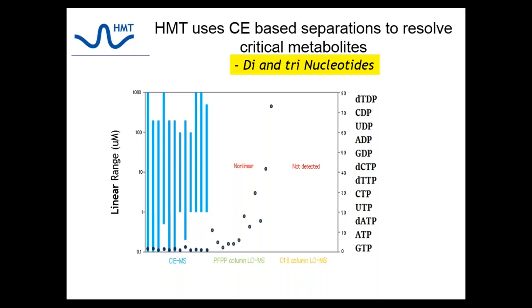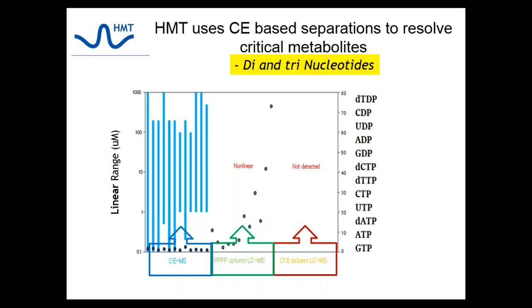In addition to having mass spectrometry resolution needed to track C-13 transfer and metabolic movement, identification of the right metabolites is a necessity. This is where CE provides HMT with accurate and quantitative measurements for many metabolites that are difficult or impossible to identify using typical LC or GC methods. Capillary electrophoresis allows for the measurement and resolution of many polar charged hydrophilic metabolites that are unresolved or poorly measured using reverse phase or PFPP chromatography. CE-MS is the only platform capable of resolving and measuring all of these in a single analysis.